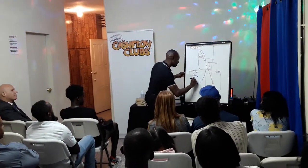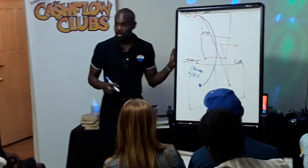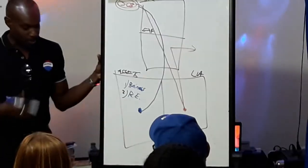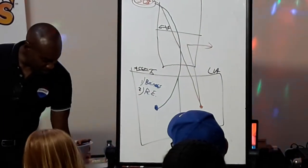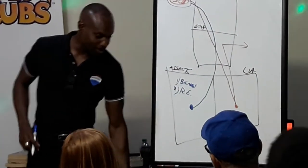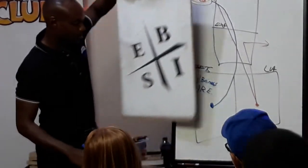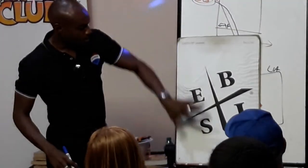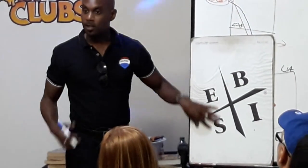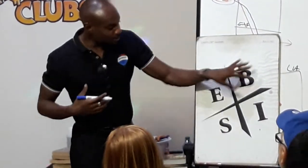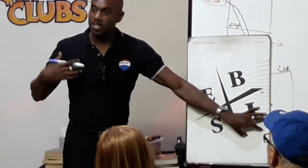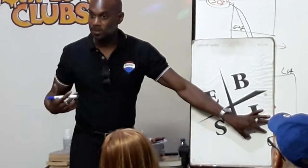Number two is real estate. That's the second asset class. I love real estate, but I prefer business. Even when you invest in real estate, you still have to build a business. It has to be done through a limited liability company — that's the major difference between this side and this side. On this side they invest in everything under their name; on this side, business owner investors, they invest in everything through a limited liability company.